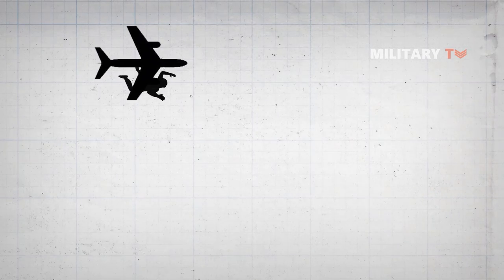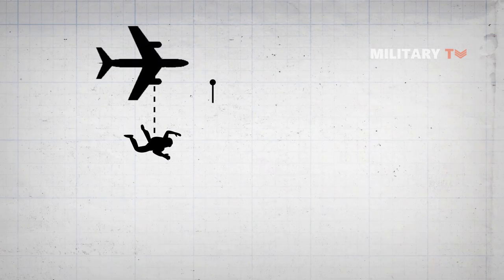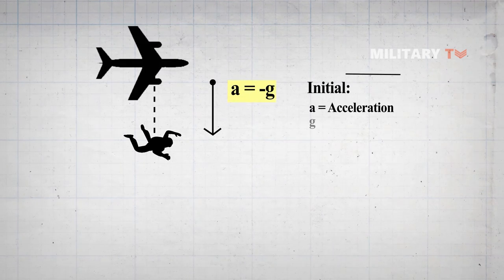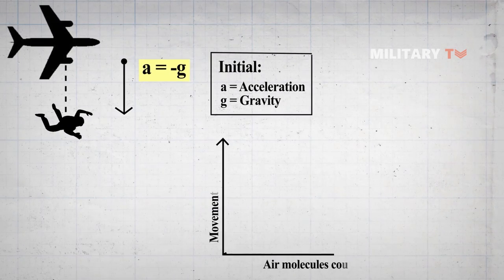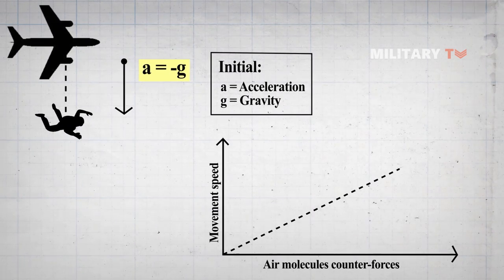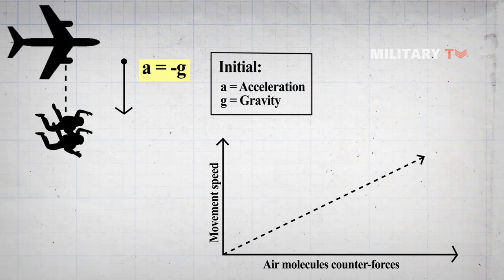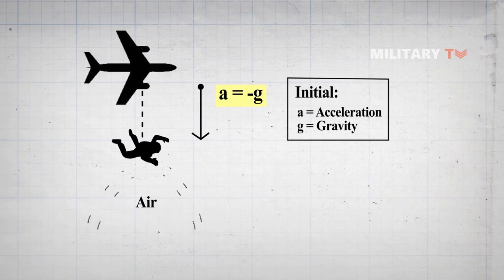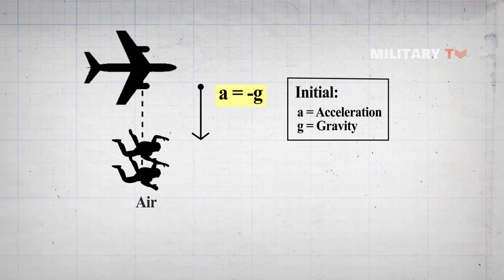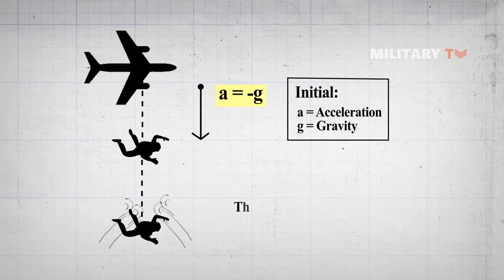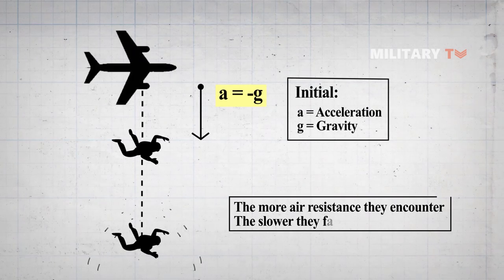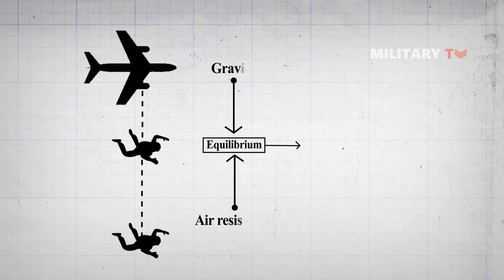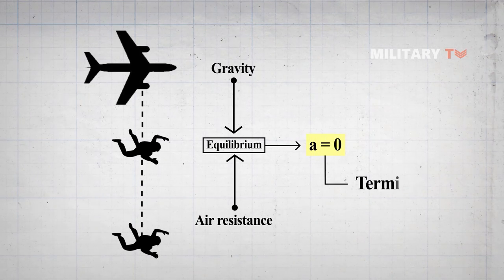When a person falls to the ground, the Earth's gravitational force accelerates them. This would be the only force acting on them in a vacuum. But gravity isn't the only force at work, because most individuals on Earth don't fall through a vacuum. The faster they move, the more air molecules they slam into on their path to the ground. The push of the body against those air molecules acts as a counterforce — air resistance. The faster gravity accelerates the person, the more air resistance they encounter, and the slower they fall. Eventually, an equilibrium is reached between the downward acceleration caused by gravity and the upward push caused by air resistance. This is called terminal velocity.